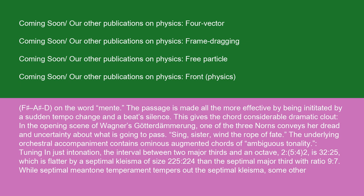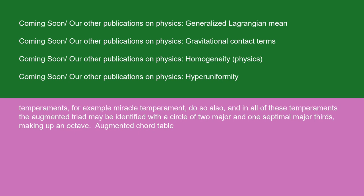Tuning in just intonation: the interval between two major thirds and an octave, (5/4)² to 2, is 32 to 25, which is flatter by a septimal schisma of size 225 to 224 than the septimal major third with ratio 9 to 7. While septimal meantone temperament tempers out the septimal schisma, some other temperaments — for example, miracle temperament — do so also. In all of these temperaments, the augmented triad may be identified with a circle of two major and one septimal major thirds making up an octave.